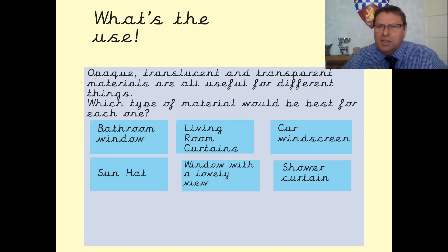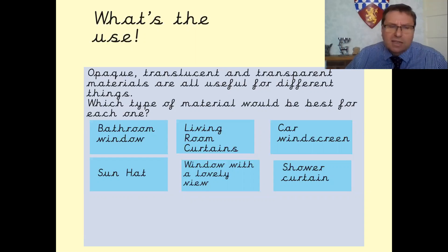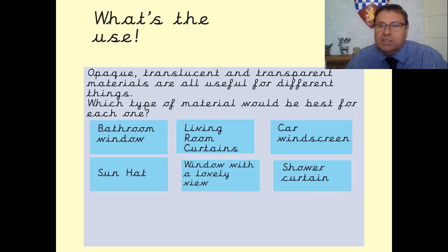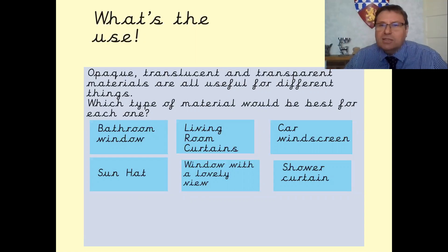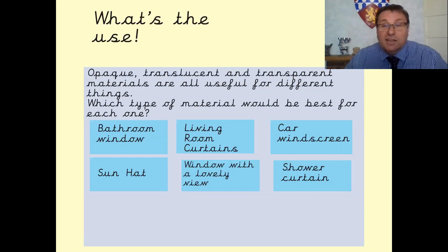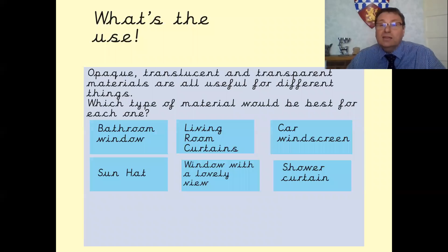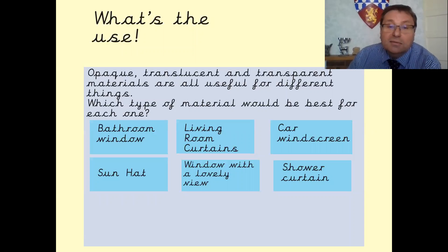A sun hat. In a previous lesson we looked at sun hats and said the whole idea is that they stop the UV rays reaching your skin. So if they were translucent or transparent they would let the sun rays in and that would be no good at all. So they need to be opaque.